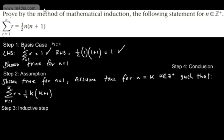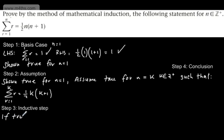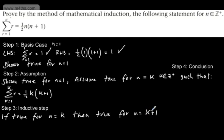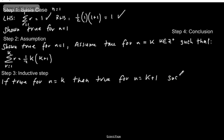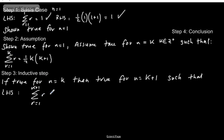Let's now go for the inductive step — step three. What we want to state is: if true for n is equal to k, then true for n is equal to k plus 1. k plus 1 is simply the next integer on, so if k was 5, this is 6. Such that, the left-hand side will now have the sum from r equals 1 to k plus 1 of r.